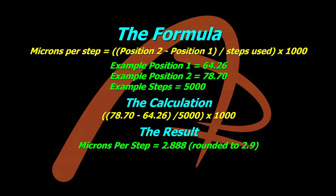Well here's the formula to measure your microns per step. It's position 2, which is the second one I took with the focuser at 10,000, minus position 1 which was at 5,000, divided by the number of steps used. In this case between five and ten thousand is 5,000 steps, and then you multiply that result by a thousand.